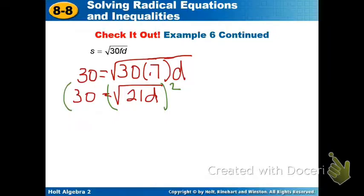30 times 30? 900. So 30 squared is 900. Now this is nice. This is why we do it, right? The square cancels out the root. So now we just have 21D.